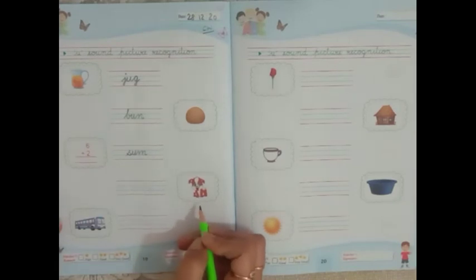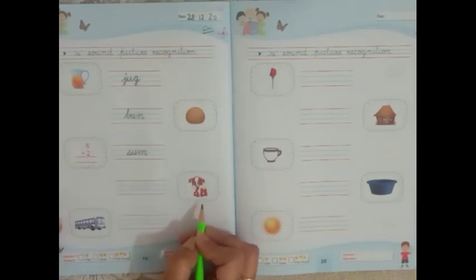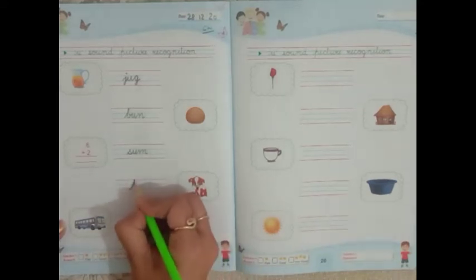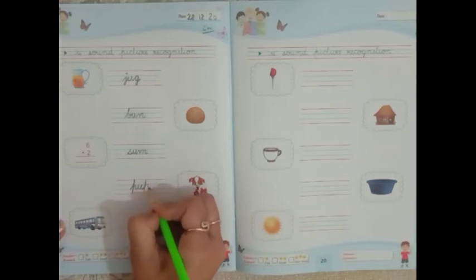Now look here. What is this? This is a pup. This is a pup, a small dog or a baby dog. P-U-P. Pup.